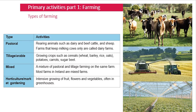Pastoral and tillage farming are probably the two most common types in County Meath. The third type is mixed farming — a mixture of both pastoral and tillage. You might keep some cows or sheep on some fields, and grow crops like wheat or barley on other fields.